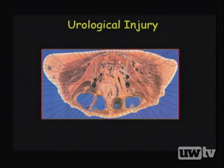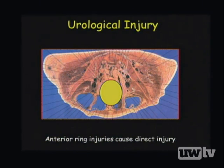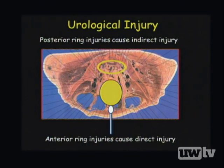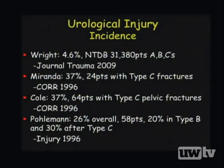Urological injury involves direct impact to the anterior pelvis and indirect injury to the posterior pelvis. Anterior ring injuries can affect the bladder, causing retroperitoneal hematomas, urinomas, and chronic UTIs. Urethral injuries can lead to strictures, erectile dysfunction, impotence, and chronic UTIs. Posterior ring injuries indirectly cause erectile dysfunction and urination problems. Reported incidence ranges from 4.6% to 37% depending on fracture type.